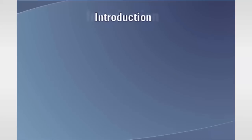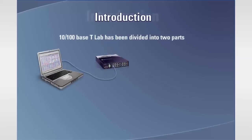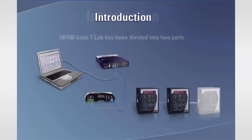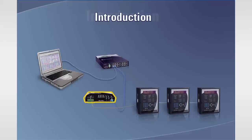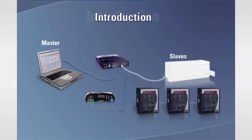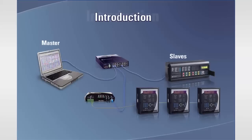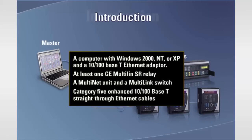The following 10/100BASE-T lab has been divided into two parts. The first will demonstrate how to interconnect a 10BASE-T Ethernet LAN and an RS-485 LAN. We will be using the GE Multilin Multinet to allow masters on the Ethernet LAN to communicate to SR relays on the RS-485 LAN. In the second part, we will demonstrate how to integrate the universal relay into the Ethernet LAN. The equipment required for this lab will include a computer with Windows 2000, NT, or XP, and a 10/100BASE-T Ethernet adapter, at least one GE Multilin SR relay, a Multinet unit and a Multilink switch, and Category 5 Enhanced T100BASE-T straight-through Ethernet cables.